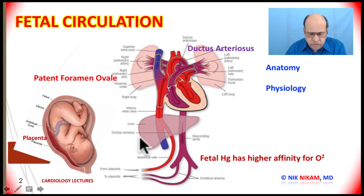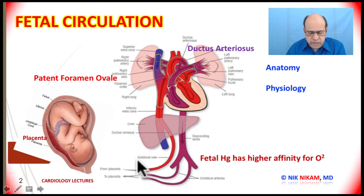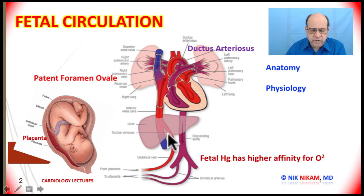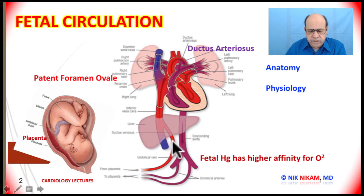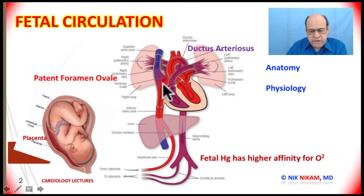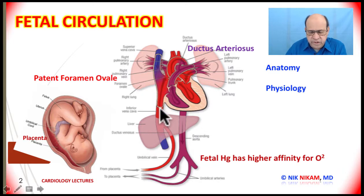There is also another important anatomic structure — the ductus venosus. The placental blood coming through the umbilical vein: part of it is directed to the liver via the portal circulation and then reaches the right atrium, while the other part goes through the ductus venosus which joins the inferior vena cava, thus eventually joining the right atrium. The rest of the structure is very similar to that of adults, with the superior and inferior vena cava, right atrium, right ventricle, left atrium, left ventricle, pulmonary artery, and aorta.